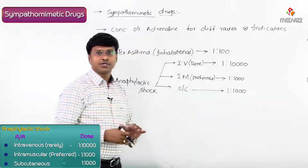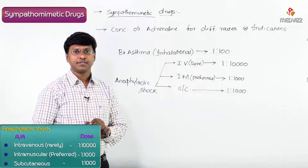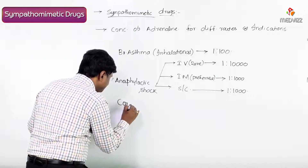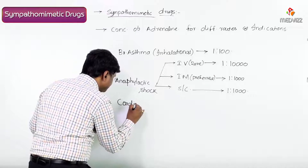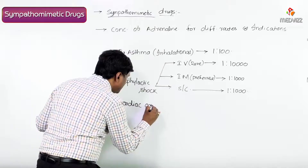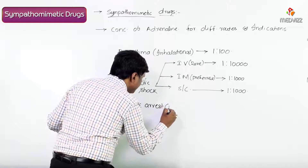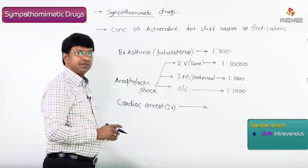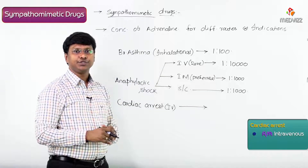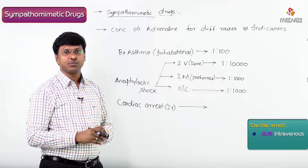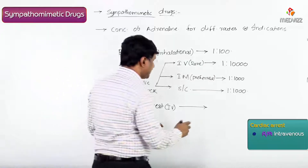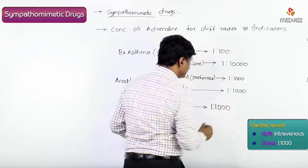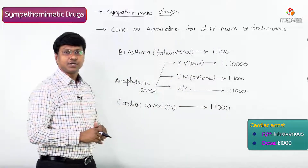In cardiac arrest, adrenaline must be given via the intravenous route. For the intravenous route in cardiac arrest, the concentration is 1:1000.